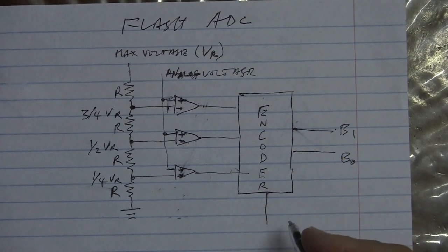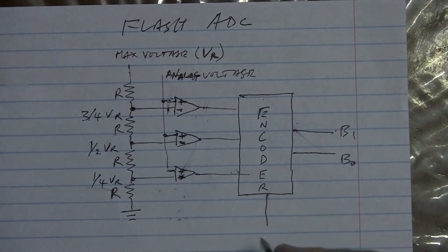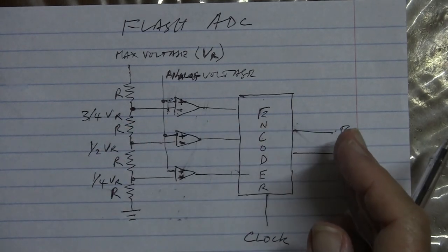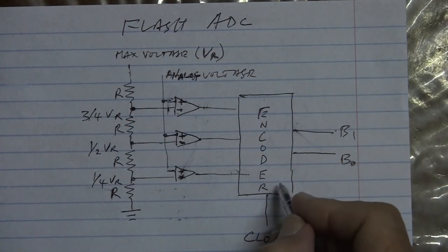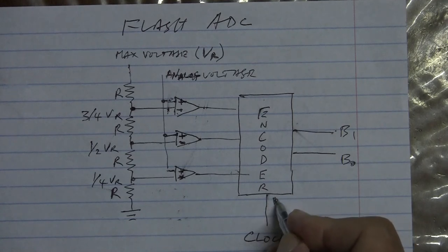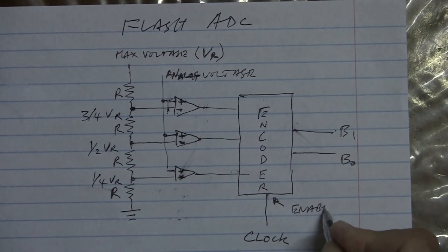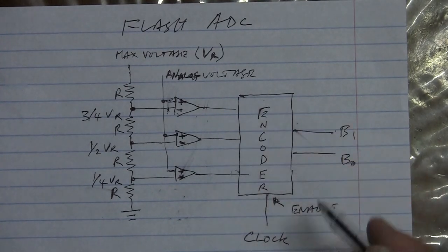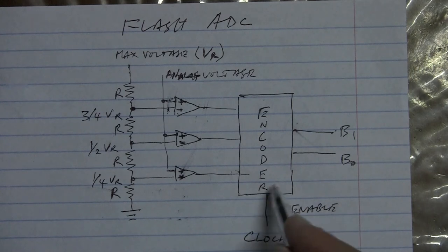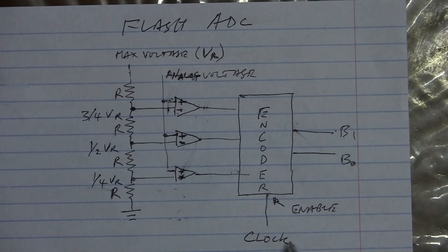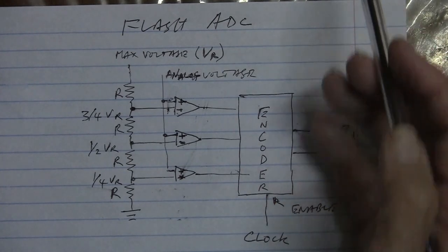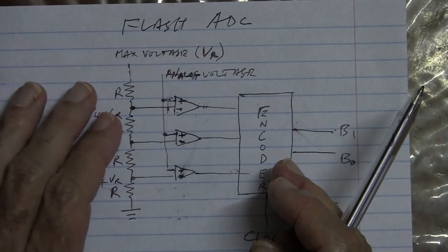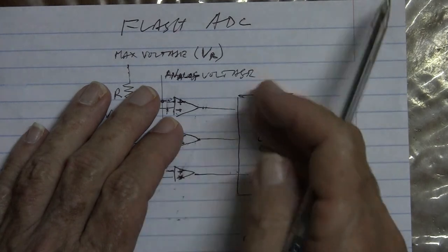So the last thing I would say about this Flash ADC is that it's always controlled with a clock. A clock governs when these are available. So only when the clock, and of course this is an enable input. Since I wrote the encoder so low, I can actually write it inside the box, but I'll put an arrow. That's an enable input which the clock goes to. So once the clock is high, the output will be available. When the clock goes low, it will not be available.